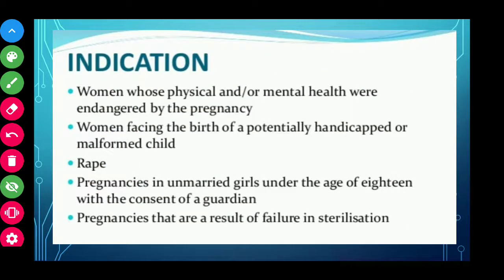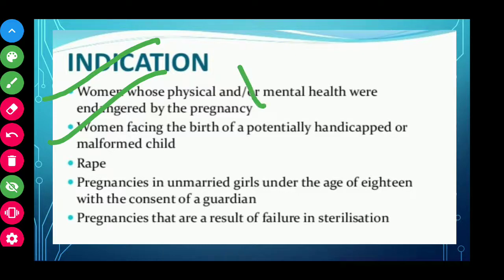Indications — the conditions in which abortion can legally be performed: women whose physical and mental health are endangered by the pregnancy. Suppose a woman has a pregnancy that will cause mental or physical problems — that pregnancy should be terminated. Also, women facing the birth of a potentially handicapped or malformed child. At the 5th month, the pregnant woman goes for a TIFFA scan, which shows if there are any malformations. If malformations are found on ultrasonography, they can go for MTP.